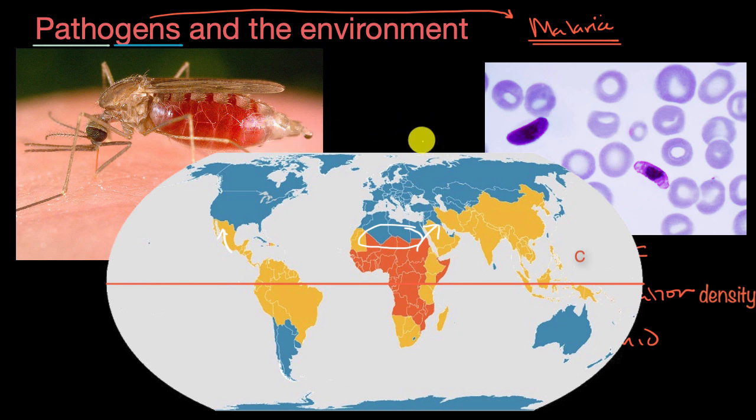And a warming, more humid environment isn't just going to support the spread of mosquitoes. It could support the spread of other pathogens, like bacteria, which could cause diseases like cholera, which is caused by infected water.